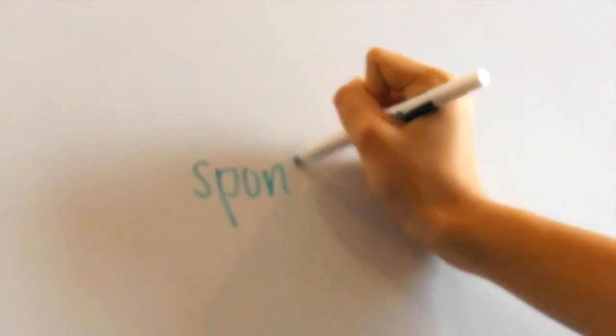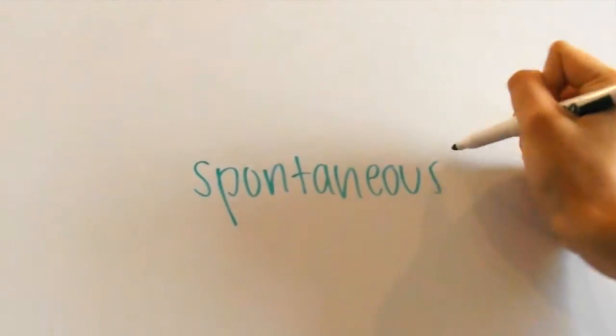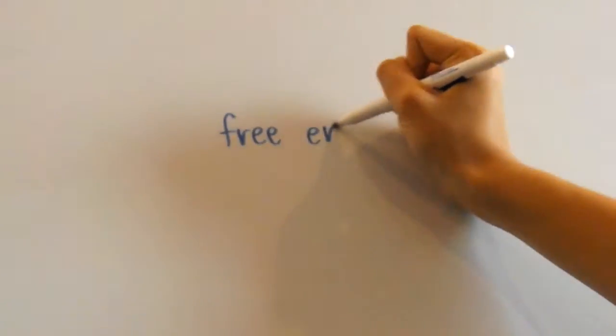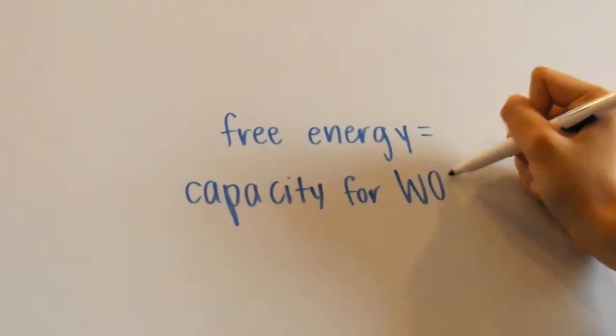The Gibbs free energy equation helps us know whether a reaction will occur spontaneously or not. Free energy is basically the capacity of how much work a system can do, usually in a cell.